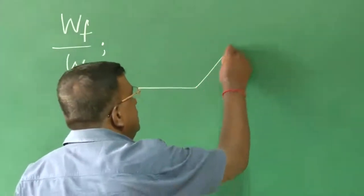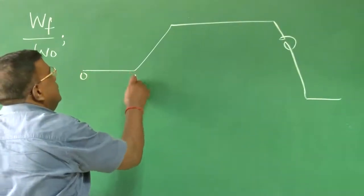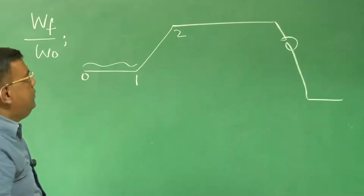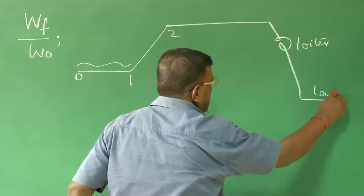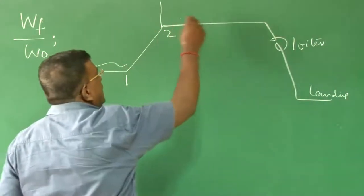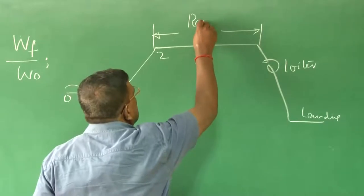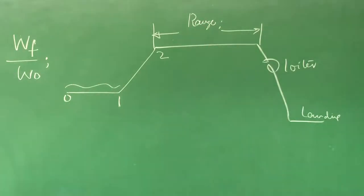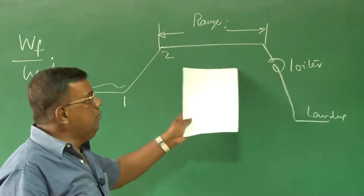For example, if I take a simple mission where this part is warm up and take off, then climb, then cruise, loiter, then landing. Today we will go back to some basic understanding for the cruise and loiter. Whatever we have studied in airplane performance we will revise, so that will help us in getting an idea how to estimate Wf by W0 for a mission as a range or a mission as a loiter.